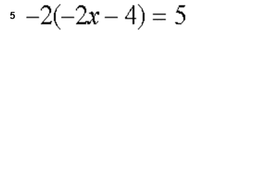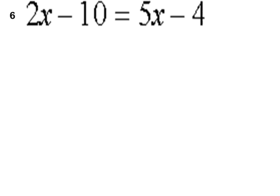Question 5 is: negative two multiplied by negative two x minus four equals negative six. Question 6 is: two x minus ten is equal to five x minus four.